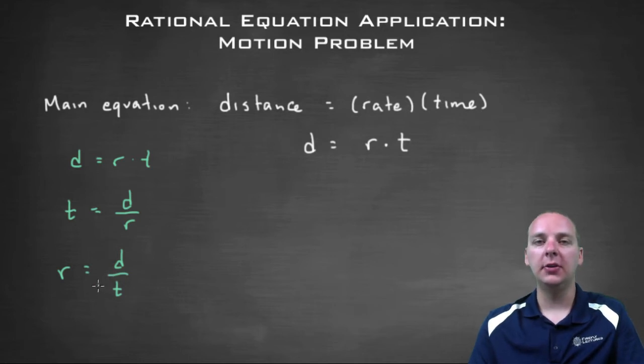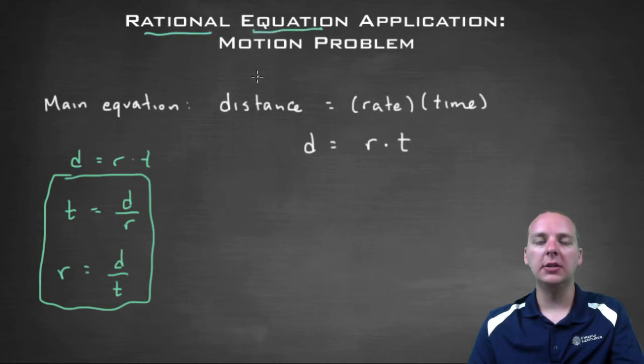And especially this last one is very intuitive. Your rate of speed would be like miles, which is a distance, per hour, or feet per second, or meters per second, or what have you. So you can manipulate that equation around. So especially the last two, this is why we see these a lot with rational equations.